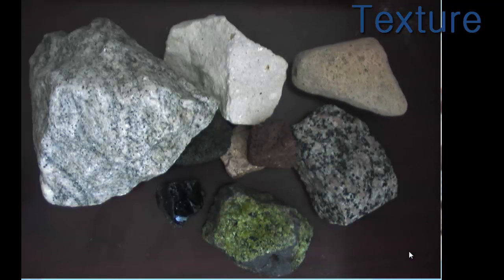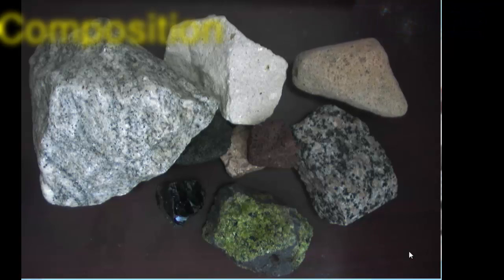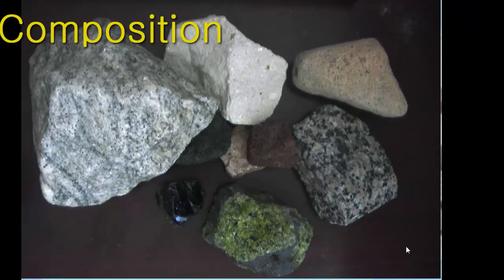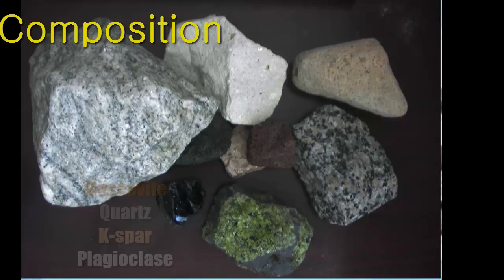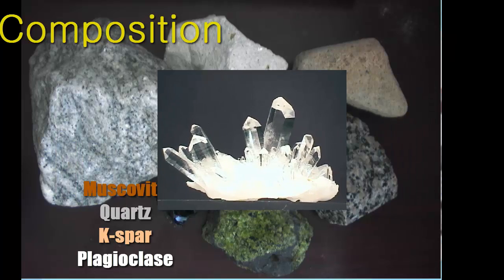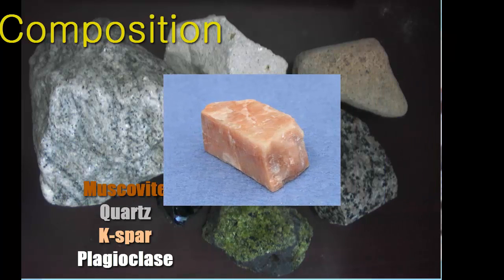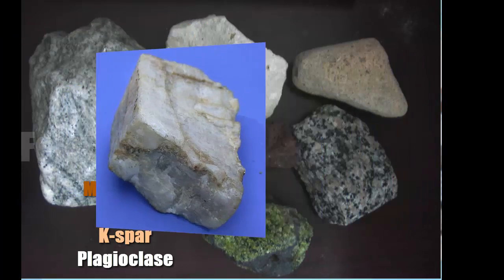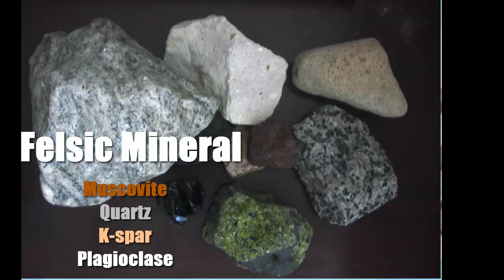All right. Instead of just looking at texture, we're also going to need to know the composition. Composition of your igneous rocks is very important. There are eight common minerals that you do need to know. And most of these you know from Unit 1. We've got four light colored minerals. We've got muscovite, quartz, potassium feldspar known as K-spar, and plagioclase feldspar. These are known as felsic minerals. Felsic just means they are very light in color.